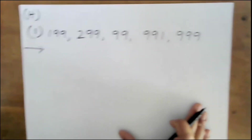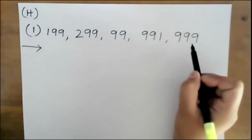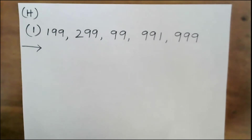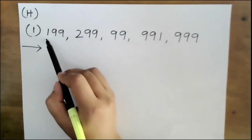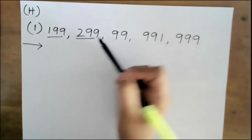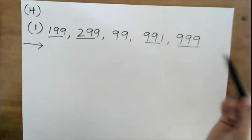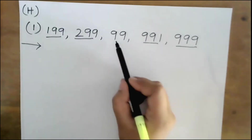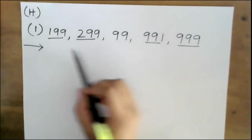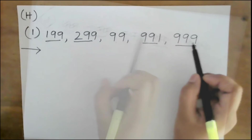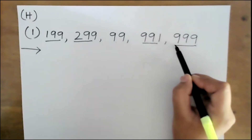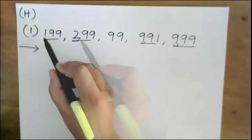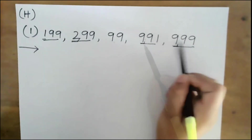Out of these, which is the biggest? Look at the numbers and count the digits. This is three digits, this also three digits, this also, and this also three digits — all four are three digits except 91. So from the three-digit numbers, look at the hundreds place: here 9, here 9, here 2, and here 1.